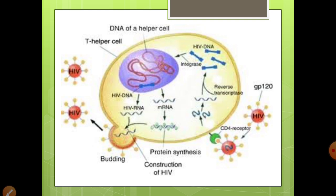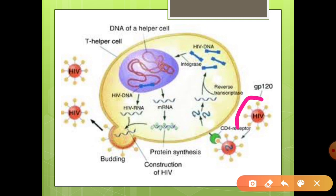This double-stranded DNA further integrates into the infected cell genome, which further causes more and more formation of HIV virus. Coming to the picture of pathogenesis of HIV, through it we will see how the HIV virus forms and spreads to more and more cells. As you are seeing here, this is a T cell which consists of gp120.